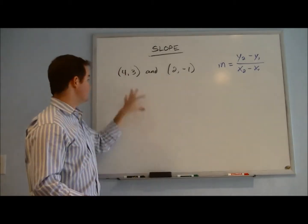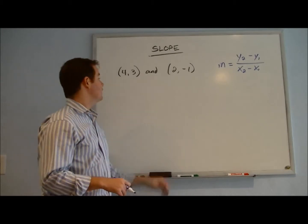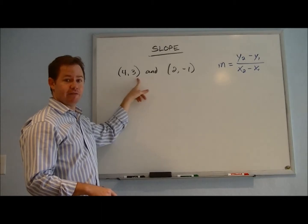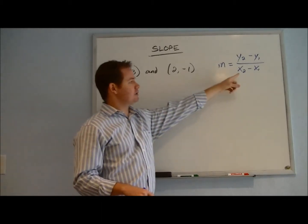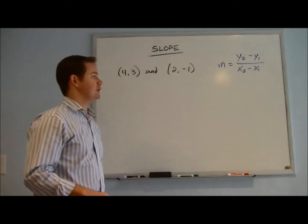Now the next step is we need to decide how to label these coordinates. We know that each coordinate inside of a parenthesis is written with your x value first, comma, and then your y value, but how do we know which one is x1 or x2, which one is y1 or y2 as it relates to this formula?